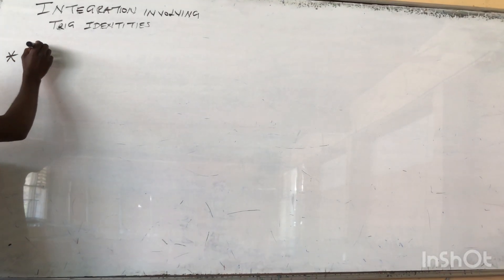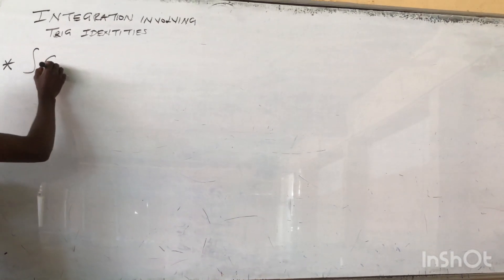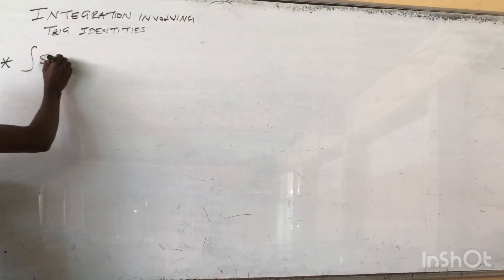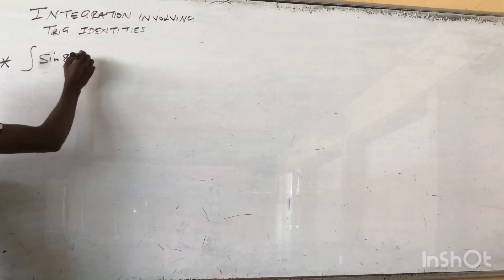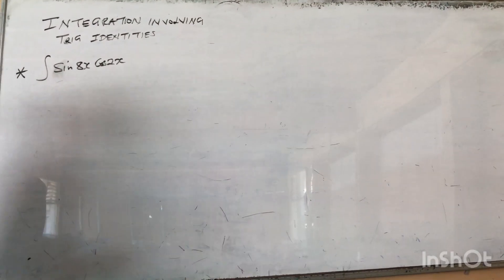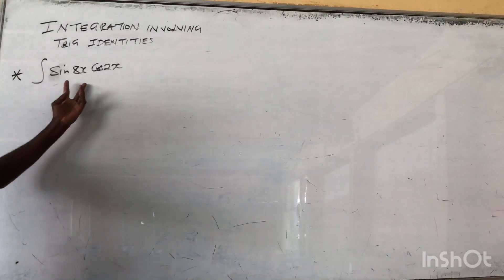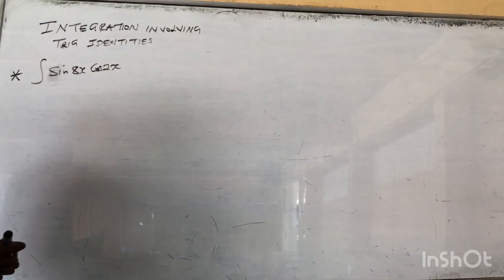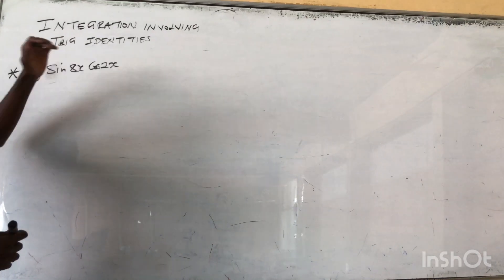Let's say you are given something like this: you are told to integrate sin(8x) times cos(2x). How can you integrate this? Here we have a product of two functions, so we don't go direct. We involve what we call trig identities.